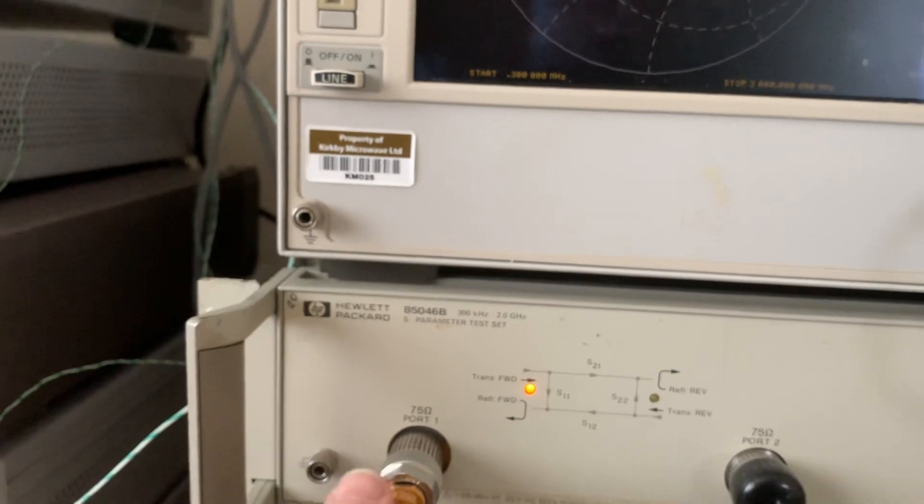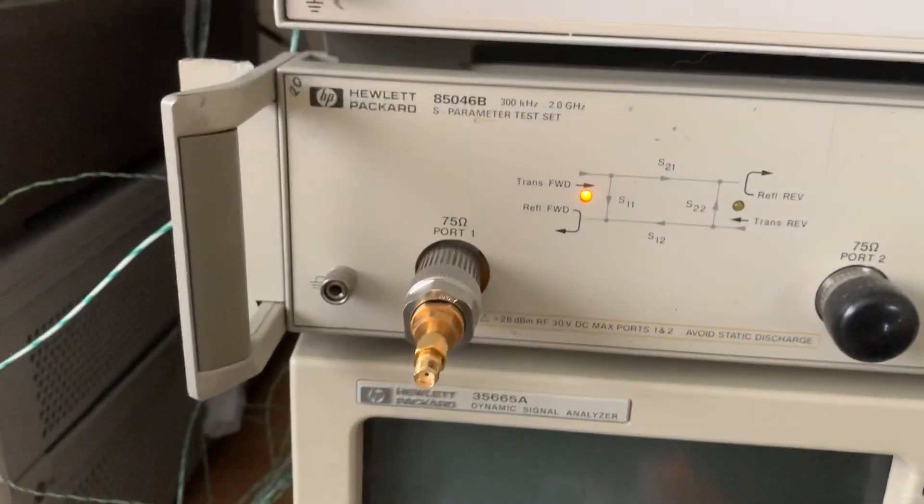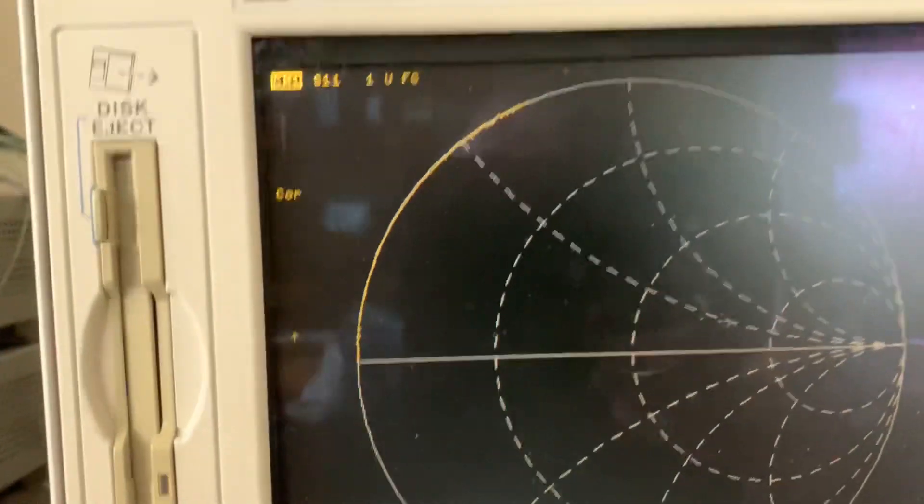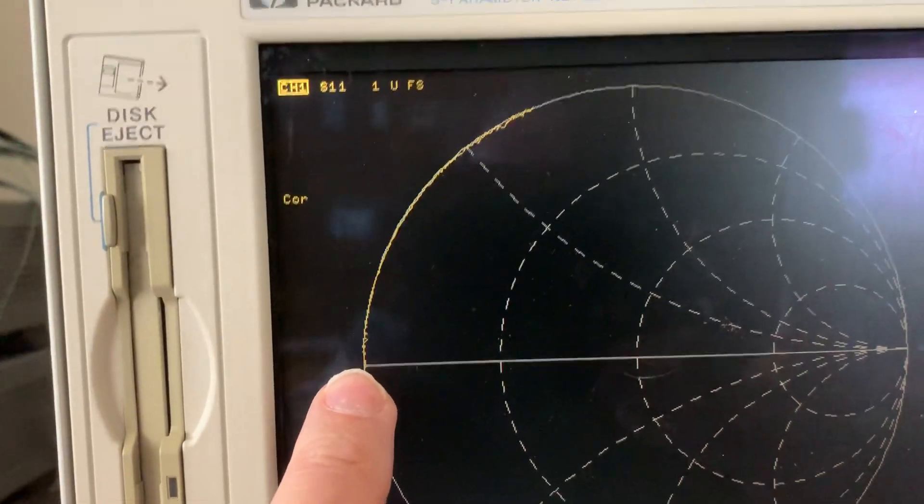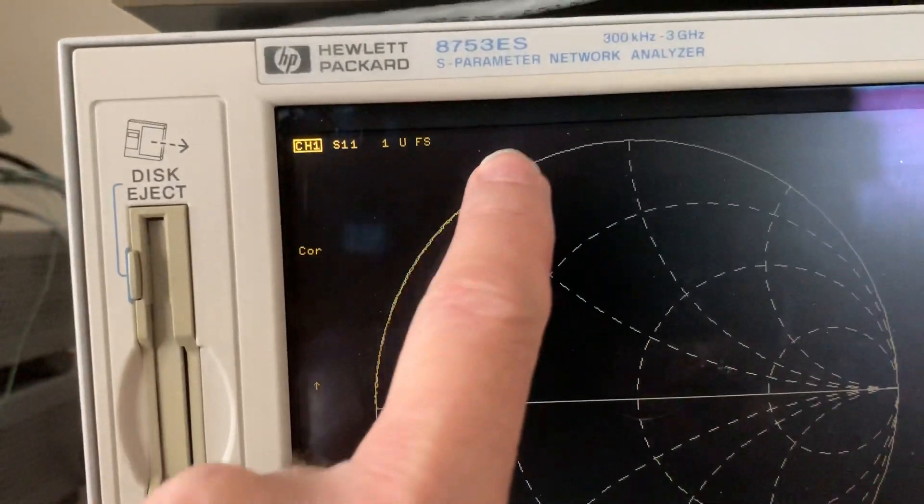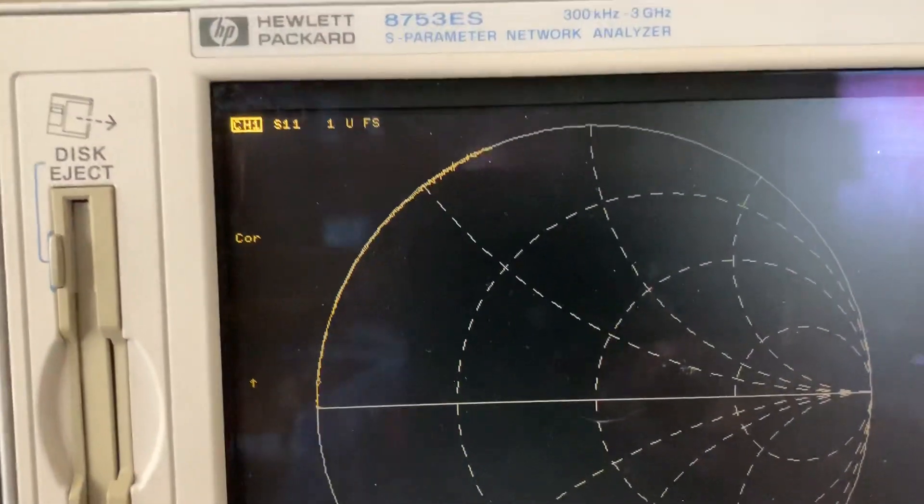Now we've got the open. If we look at the Smith chart, it actually starts on the left, which is where a short should be, and goes around as the short should be.